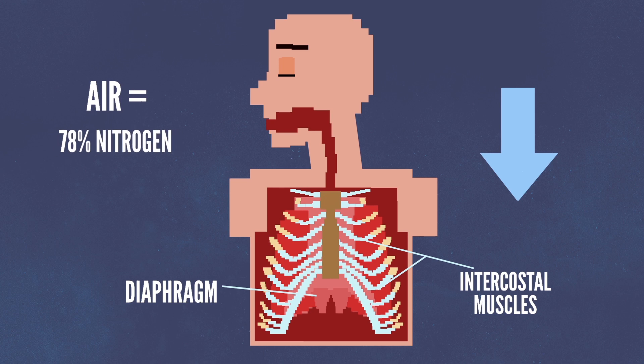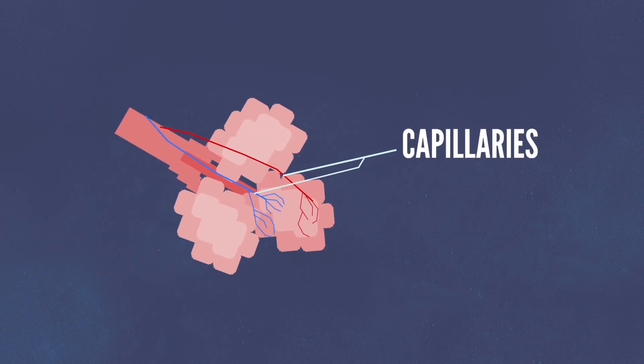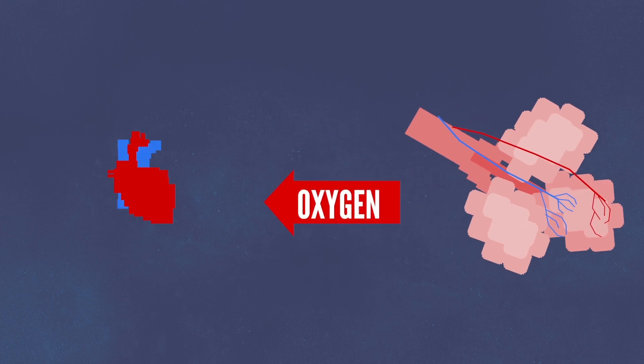The air contains about 78% nitrogen, 21% oxygen, and 1% argon. But when the air reaches the tiny air sacs in the lungs, called the alveoli, some of that oxygen passes through your capillaries, or blood vessels, and eventually reaches the heart.